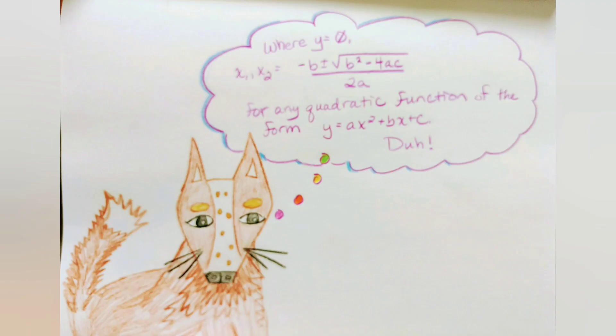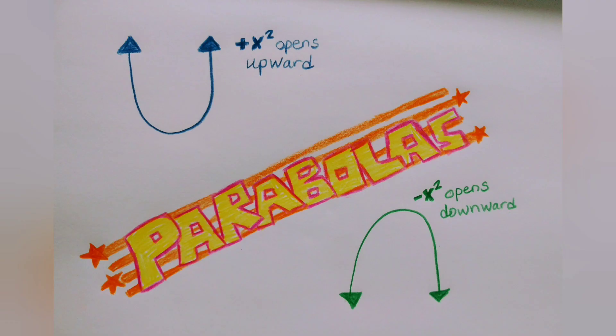Nico knew all about quadratic functions because his mom was a math teacher. She taught him how to find roots using the quadratic formula. She also taught him that when a quadratic function is graphed, it makes a shape called a parabola.